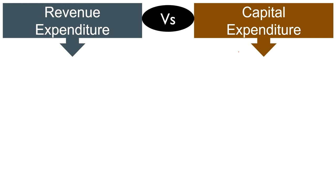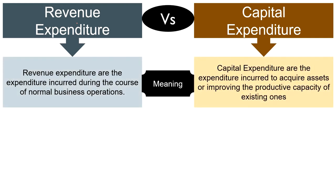Coming to the differences between revenue expenditure and capital expenditure. Revenue expenditure is incurred during the course of normal business operations — production of goods or rendering of services — which facilitates revenue generation. It is also known as operating expenses. On the other hand, capital expenditure is incurred to acquire assets or improve the productive capacity of existing ones. When a company uses its funds to purchase, improve, extend, or upgrade its long-term assets to increase their working capacity, it is a capital expenditure.